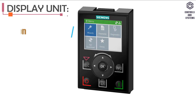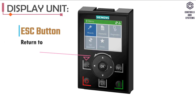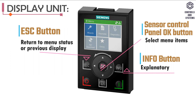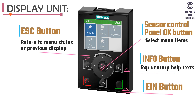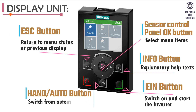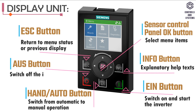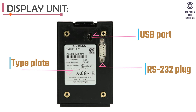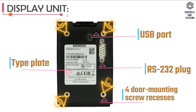Display unit: Escape button — used for return to menu status or previous display; Sensor Control Panel OK button — used for select menu items; Info button — used for explanatory help texts; EIN button — used for switch on and start the inverter; Hand and Auto button — used for switch from automatic to manual operation; AUS button — used for switch off the inverter; Type Plate; USB Port; RS-232 Plug; and 4-door mounting screw recesses.